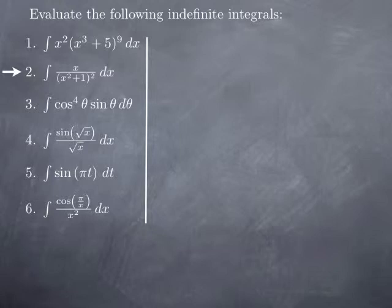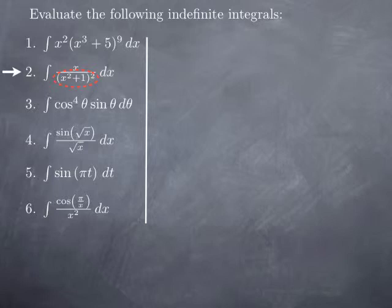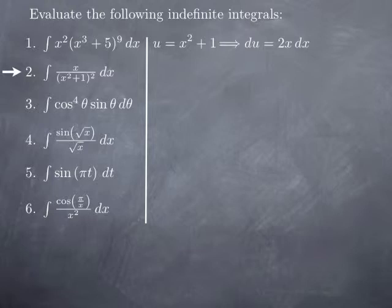Moving on to the second integral, we want to integrate x over x squared plus 1 squared. Again we are looking for the composite part. We see that we have the function x squared plus 1 that is plugged into a square at the bottom — in other words, it's the power negative 2 of x squared plus 1. So I'm going to take u as x squared plus 1, calculate du, that's 2x dx, and try to match with what I have in the integral.